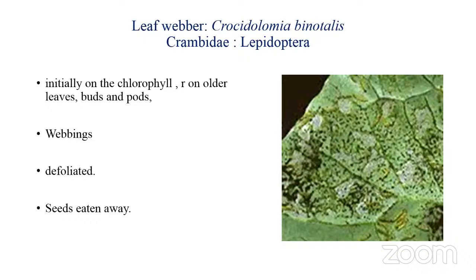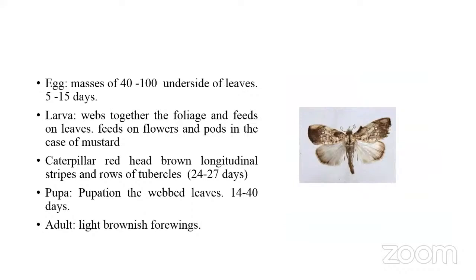The next pest is the leaf webber, Crocidolomia binotalis, also known as the larger moth of mustard, belonging to family Crambidae and order Lepidoptera. Newly hatched larvae initially feed on the chlorophyll of young leaves and later feed on older leaves, buds, and pods. They make webbings and live within them. Severely attacked plants are defoliated and seeds in the pods are eaten away. The female moth lays eggs in masses of 40 to 100 on the underside of leaves, hatching within 5 to 15 days.